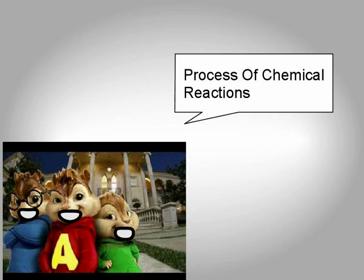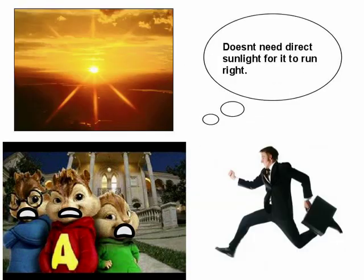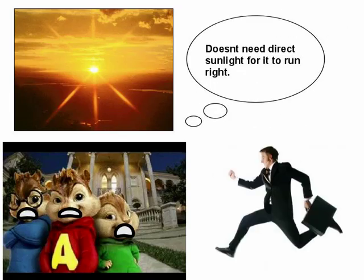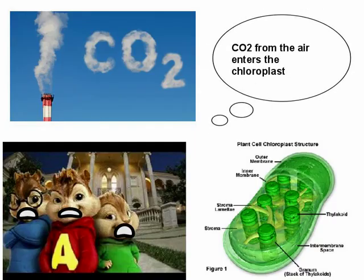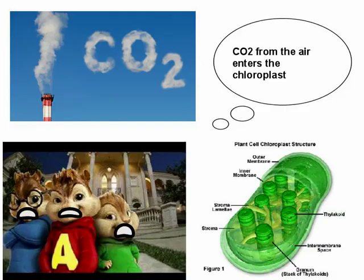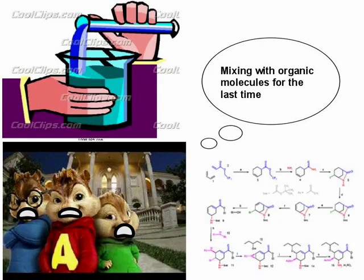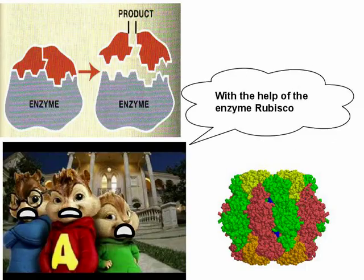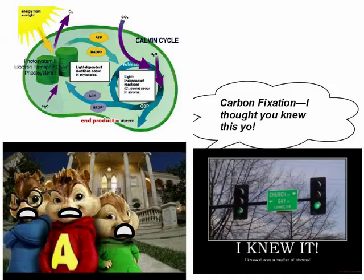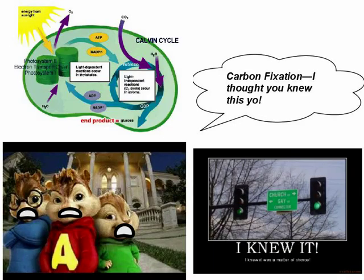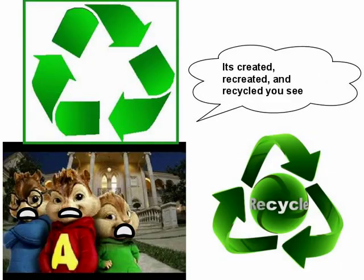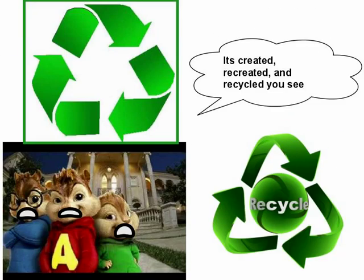The Calvin cycle, or dark reaction, doesn't need direct sunlight to run. CO2 from the air enters the chloroplast, mixing with organic molecules. With the help of enzymes, there's carbon fixation — it forms a compound known as G3P, it's created, recreated, and the cycle is seen.